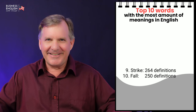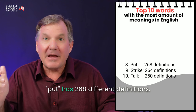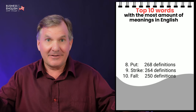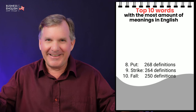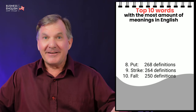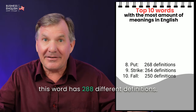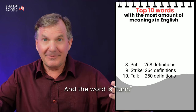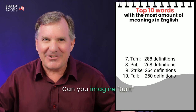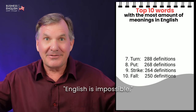At number eight, the word is 'put.' If you can imagine, the word put has 268 different definitions. English is impossible. At number seven, the word is 'turn.' Turn has 288 different definitions. English is impossible.